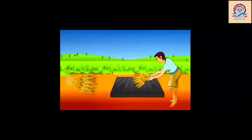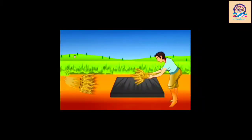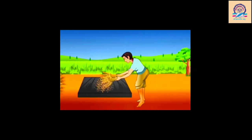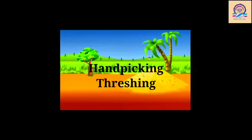As you can see in the video, the farmer is beating the stalks to separate the seeds from them. With that, we have completed our two methods of separation — one is handpicking and another one is threshing. We will meet in the next video. Thank you.